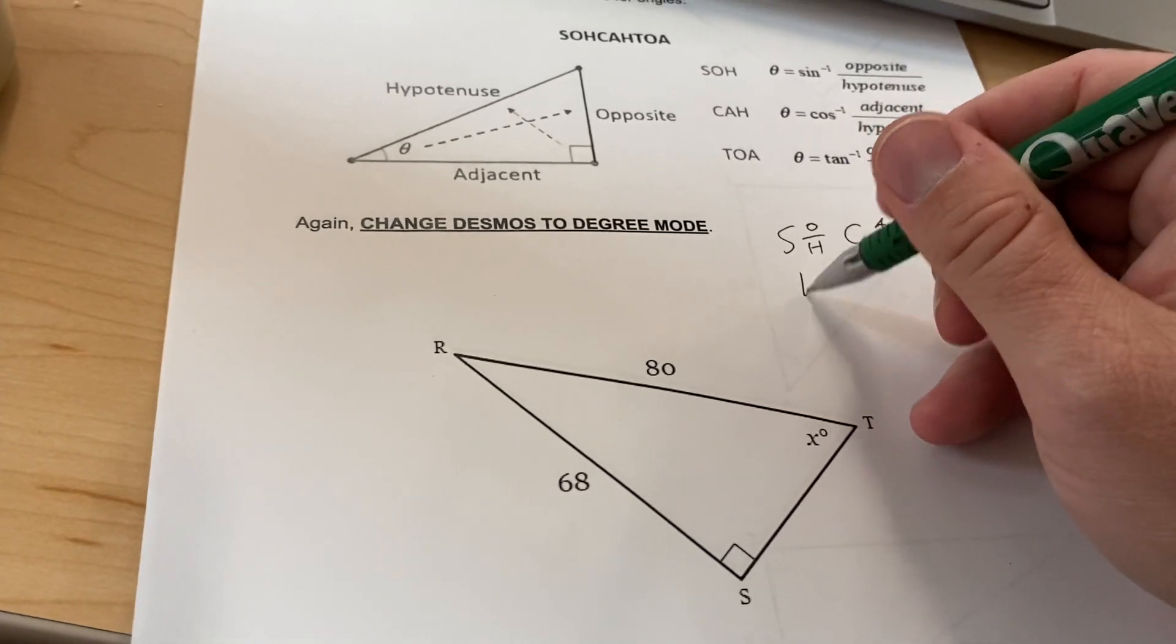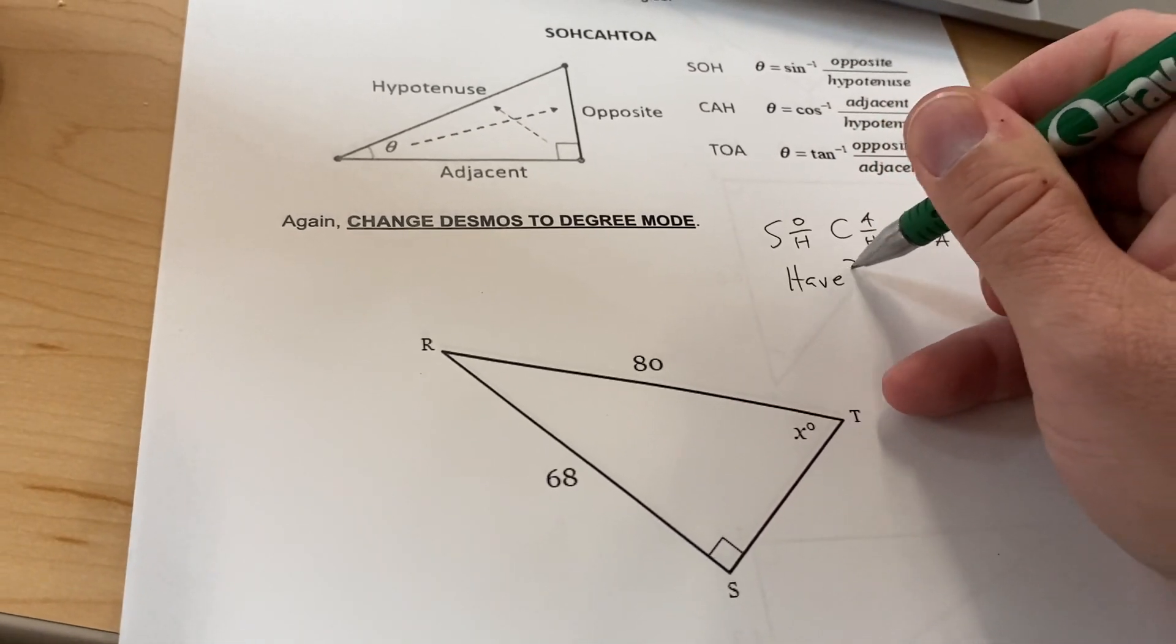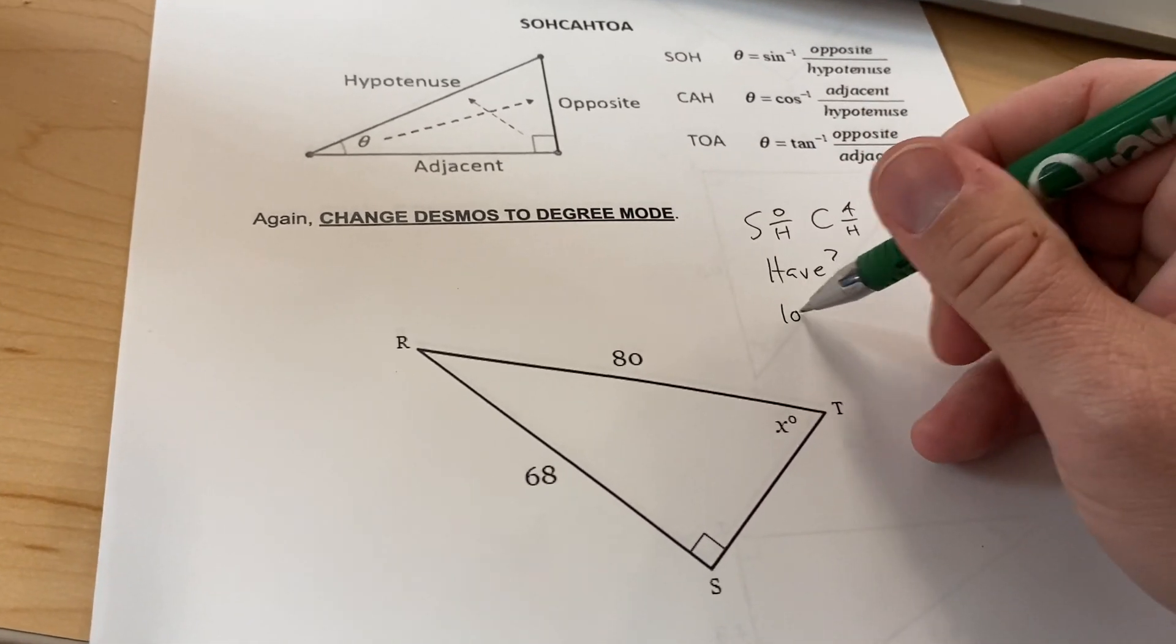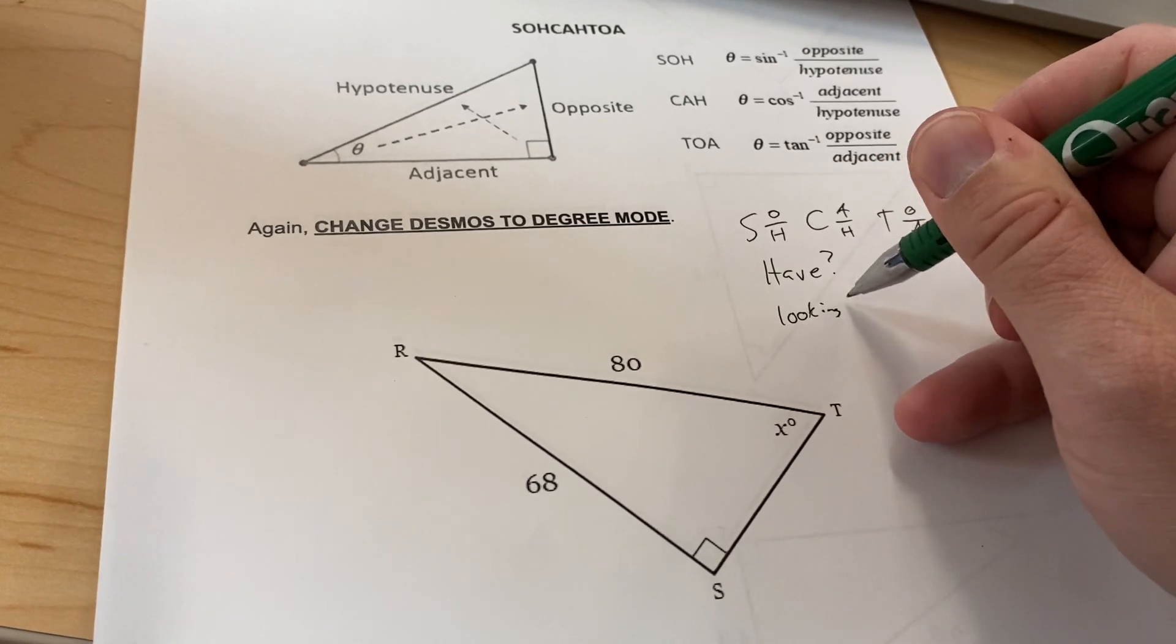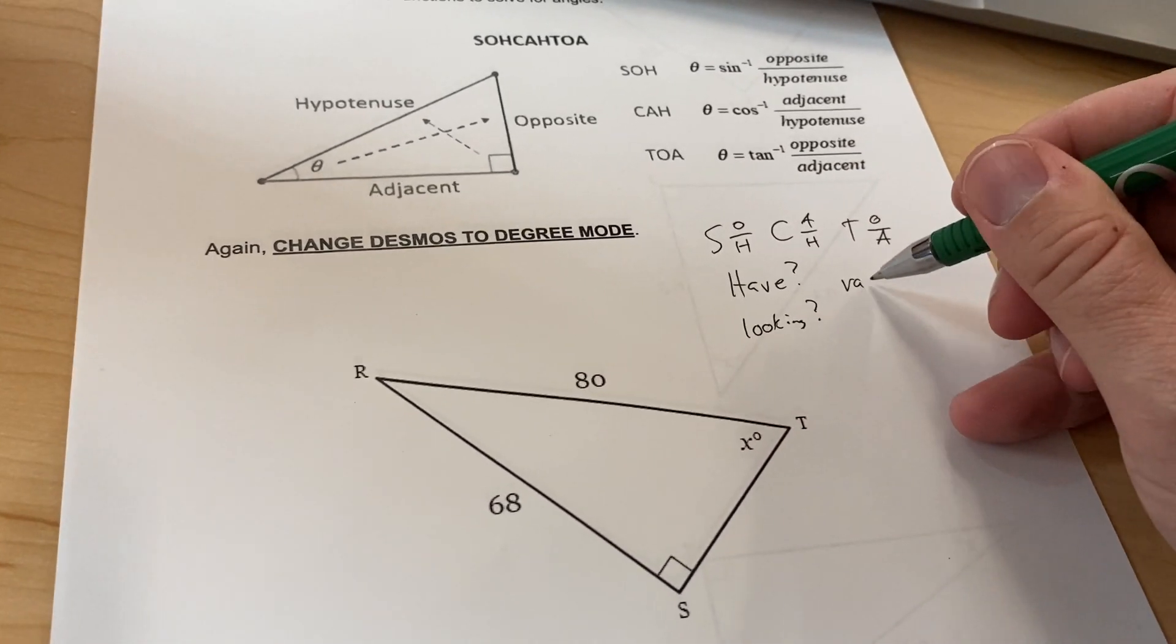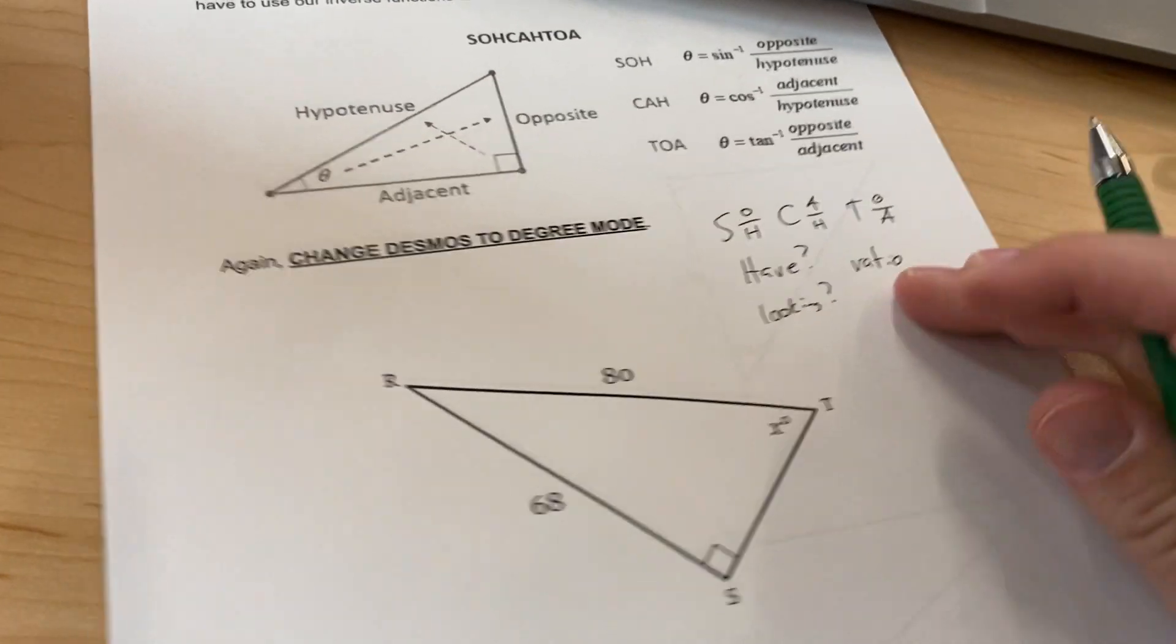And again, we need to ask ourselves: what do we have, what are we looking for, and what is our ratio going to be?